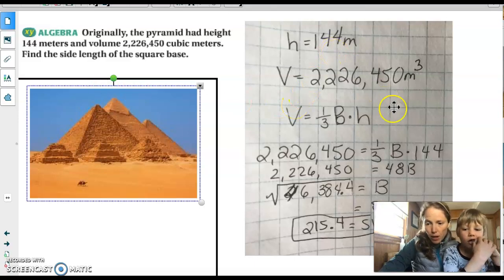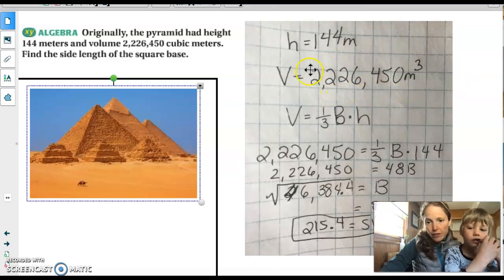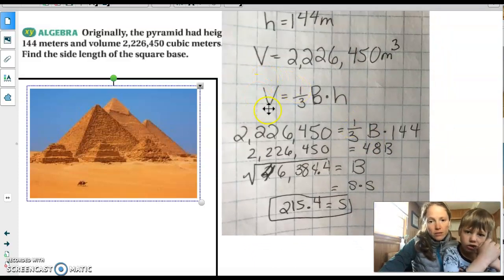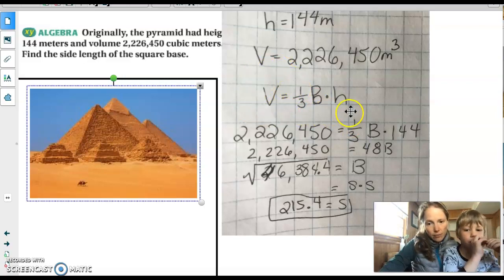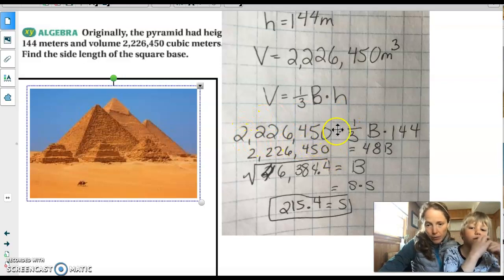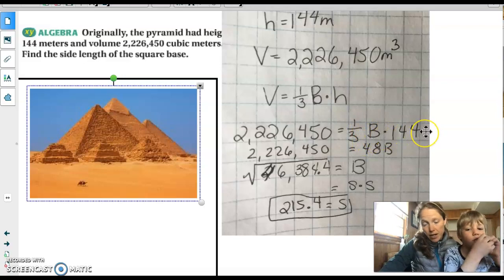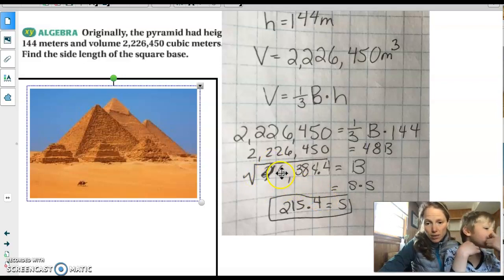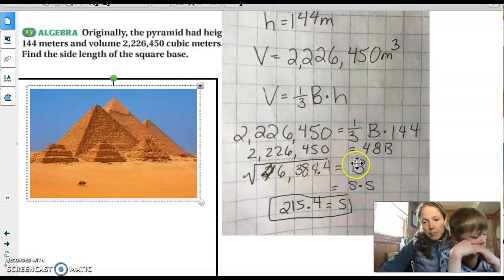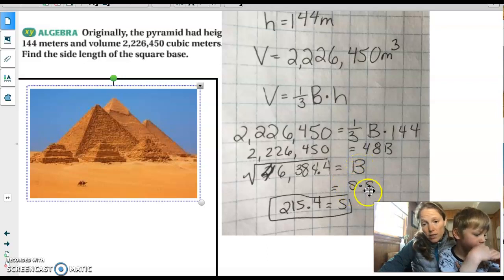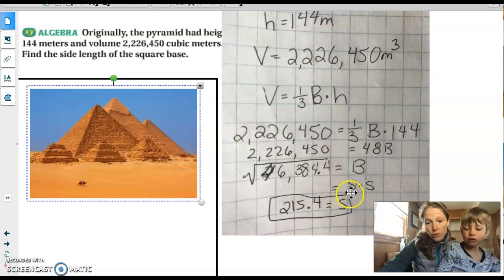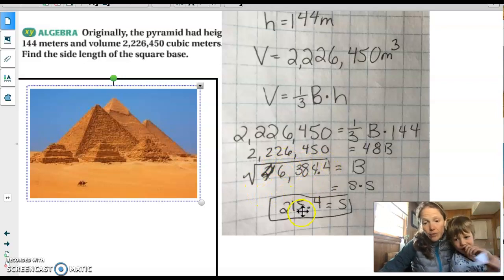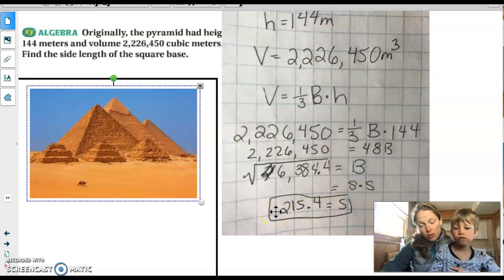So hopefully you've had a chance to pause me and try it. But in this case, because we're given the volume, we're going to be working backwards to try to find the side length. And what we know is that the volume of that pyramid is 1 third base times height. So this is the volume that we were given. We know it's equal to 1 third the base, which we don't know yet, times the height, which we have. When we divide, we get that the base is equal to 46,384.4. But then we also know that the base, because it's a square, is equal to one side times the other. And they are both equal. So we can just say it's equal to S times S. And then if we take the square root of that, we find that one side of that pyramid would be 215.4.